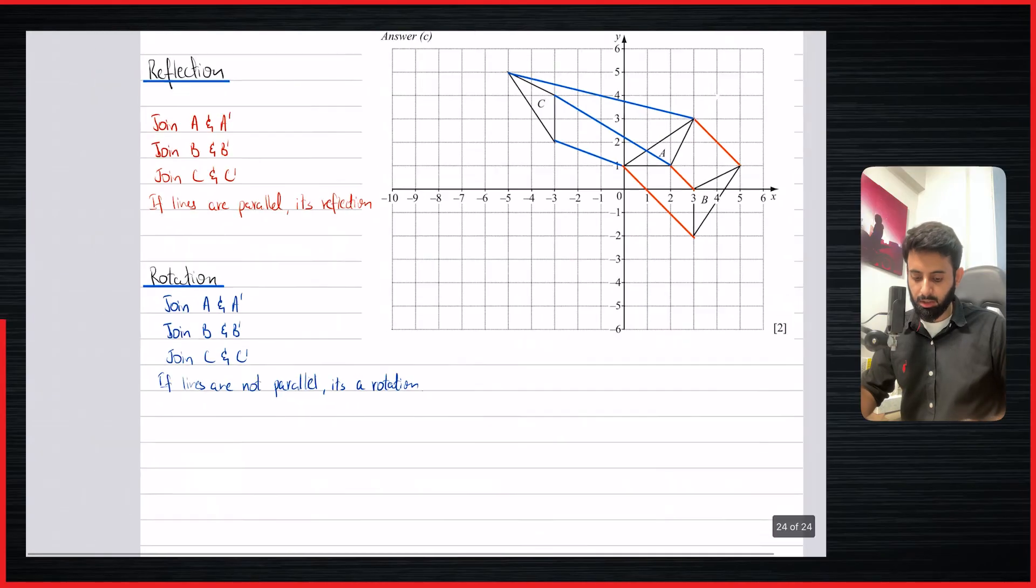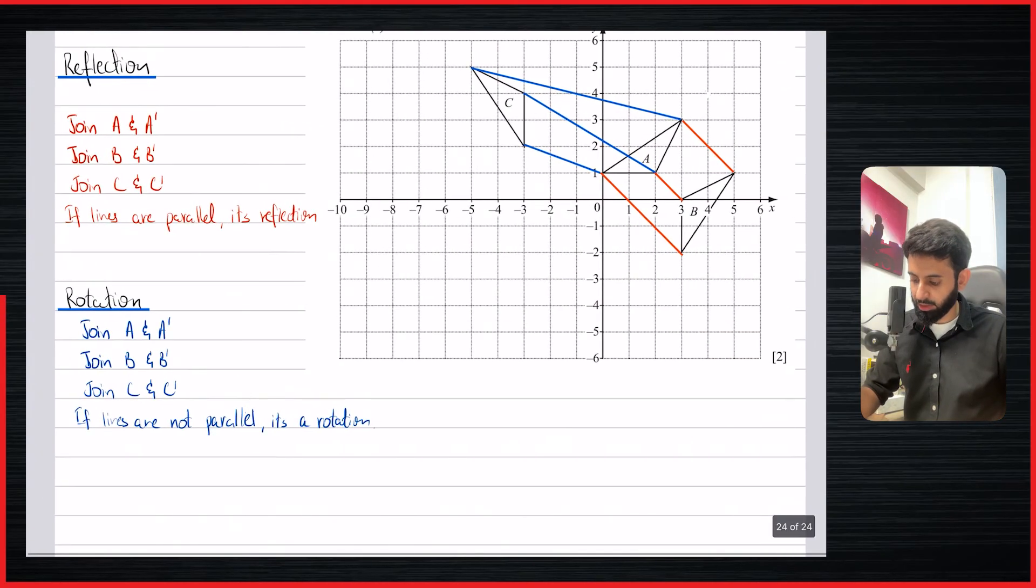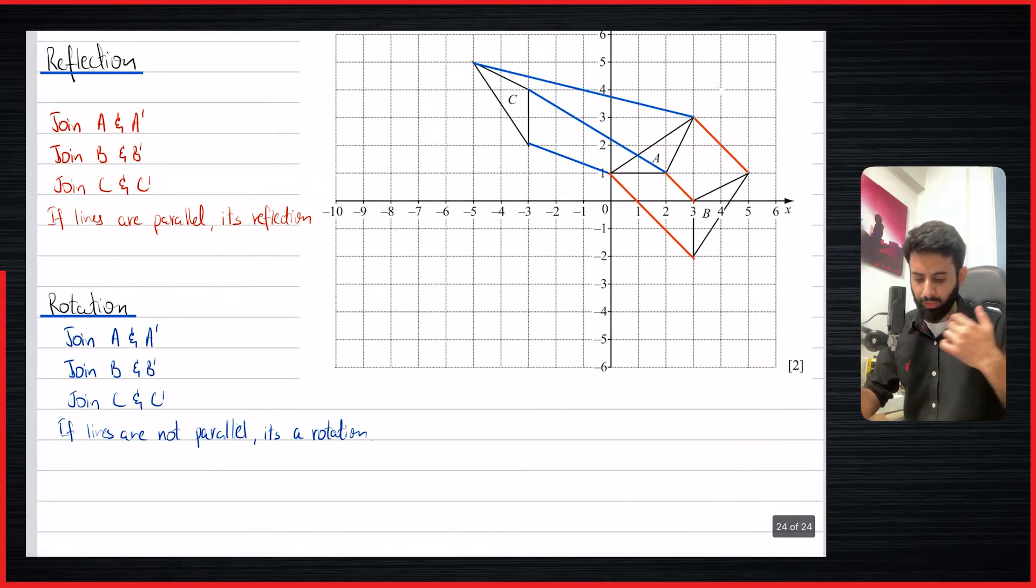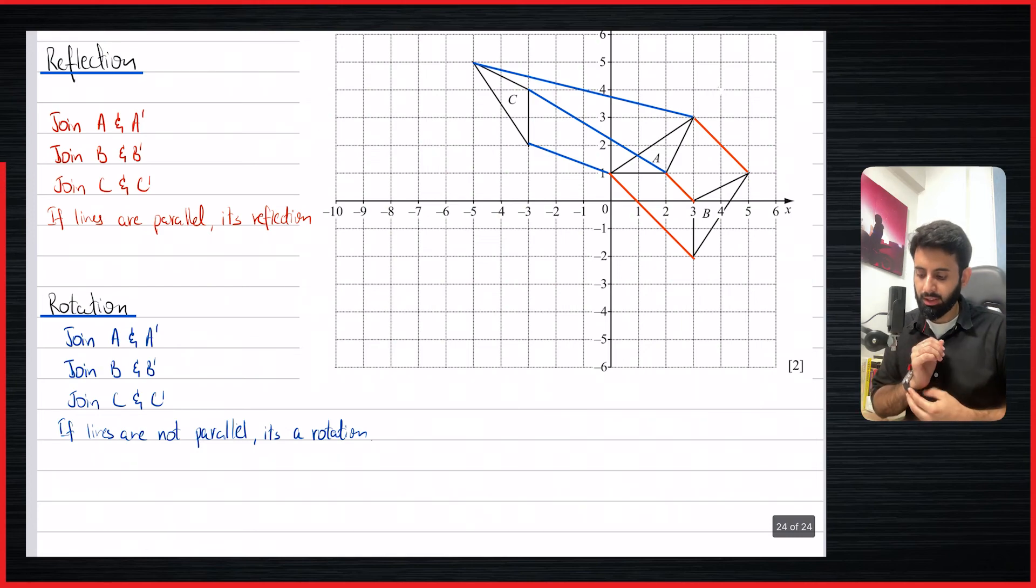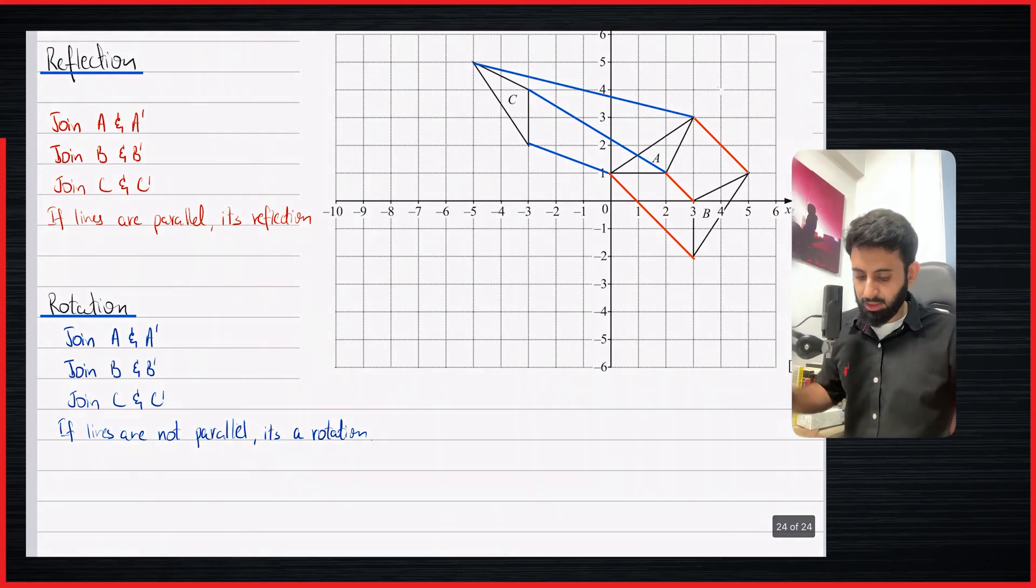So there you go. This is how you distinguish between reflection and rotation. And you don't really have to physically draw the lines. You can just sort of put your scale and get an idea if the lines are parallel. But if you have any doubt, it's best to play it safe and actually draw the lines and then see. So that's it for this video. I hope you understood this concept. I'll see you guys in the next video in which we will start with translation. See you guys then. Until then, take care. Bye bye.